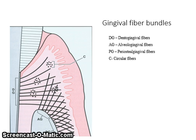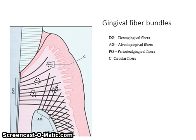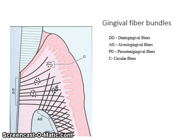These fiber bundles connect adjacent teeth to one another. Dento-gingival fibers are embedded in the cementum near the cemento-enamel junction and fan out into the gingival connective tissues. These fibers act to attach the gingiva to the teeth. Periosteo-gingival fibers extend laterally from the periosteum of the alveolar bone. These fibers attach the gingiva to the bone.